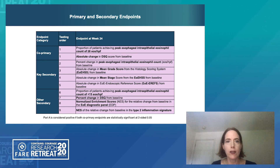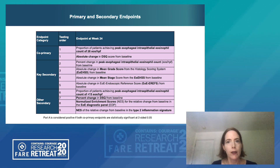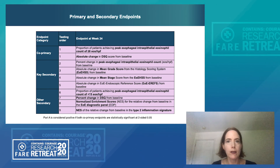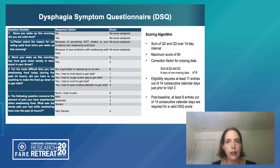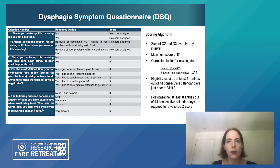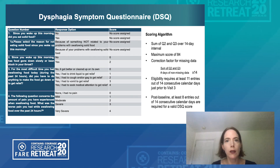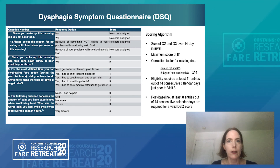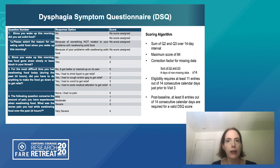The other co-primary endpoint is the proportion of patients meeting the histologic threshold of less than 60 eosinophils per high-power field. Additional histologic, anatomic, and transcriptome endpoints were also evaluated. The DSQ score is calculated using questions two and three, assessing difficulty in swallowing and any interventions utilized to help the person swallow, evaluated in 14-day blocks of time, giving a maximum score of 84 for any two-week period.